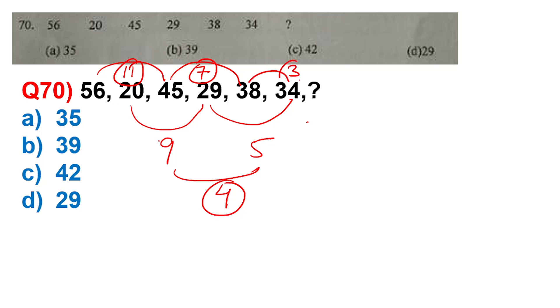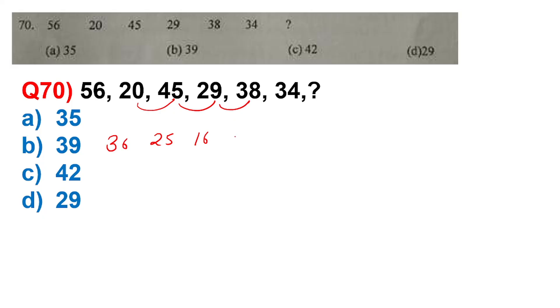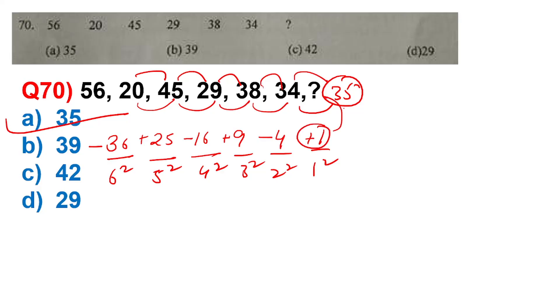7 minus 3. And 38 minus 3 is 35, because 11 to 7 gap is 4, 7 to 3 gap is 4, gap always 4. Or this concept: 56 to 20 gap is 36, 20 to 45 gap is 25, 45 to 29 gap is 16, 29 to 38 gap is 9, 38 to 34 gap is 4. Because 6 square, 5 square, 4 square, 3 square, 2 square, 1 square. It means 35 is correct answer.